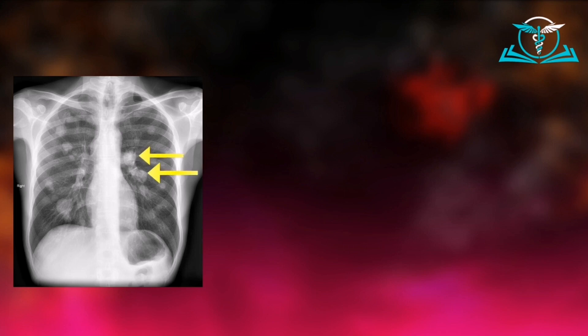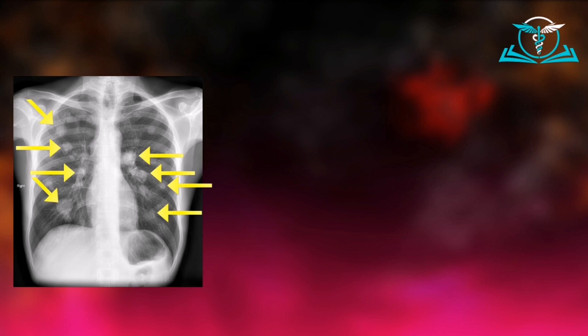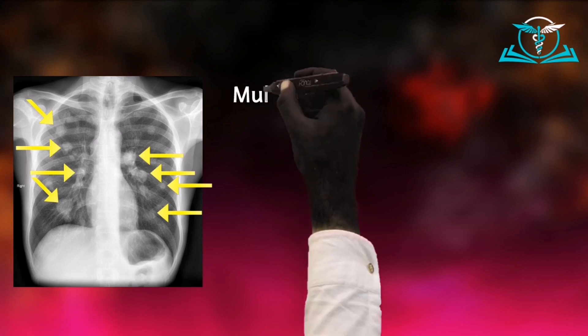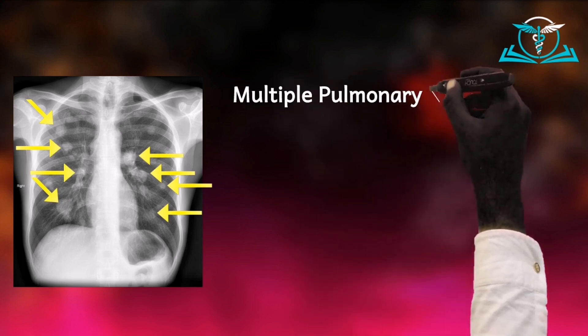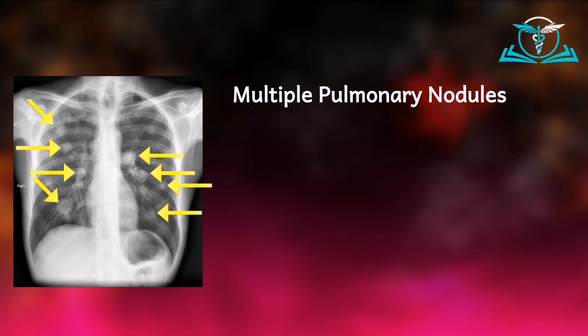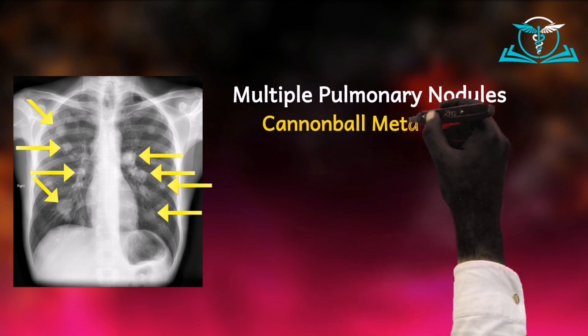These are the pathologies as indicated. On the right side of the chest we have nodules here, another one here, and the last one indicated here. This pattern on the chest radiograph shows multiple pulmonary nodules, classically described as cannonball metastasis.